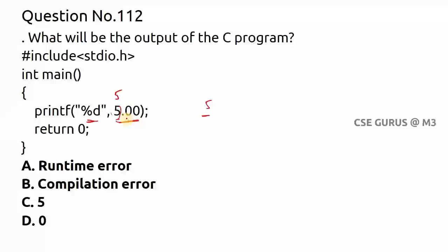Float has a different memory allocation compared to integer. Float values like 5.0000000001 are allocated differently from integers like 5 or 6. Because the memory arrangement of float is different from integer, when you print a float using the %d (integer) format specifier, it does not print just the integer value.